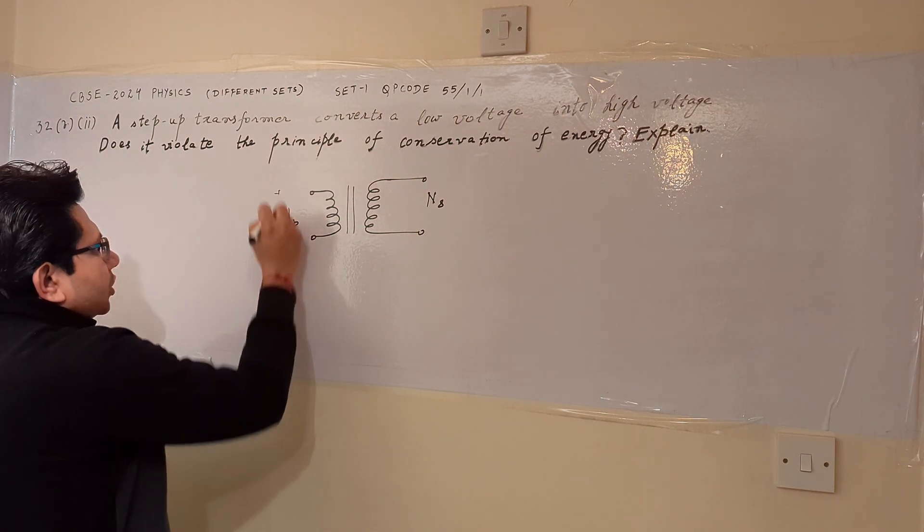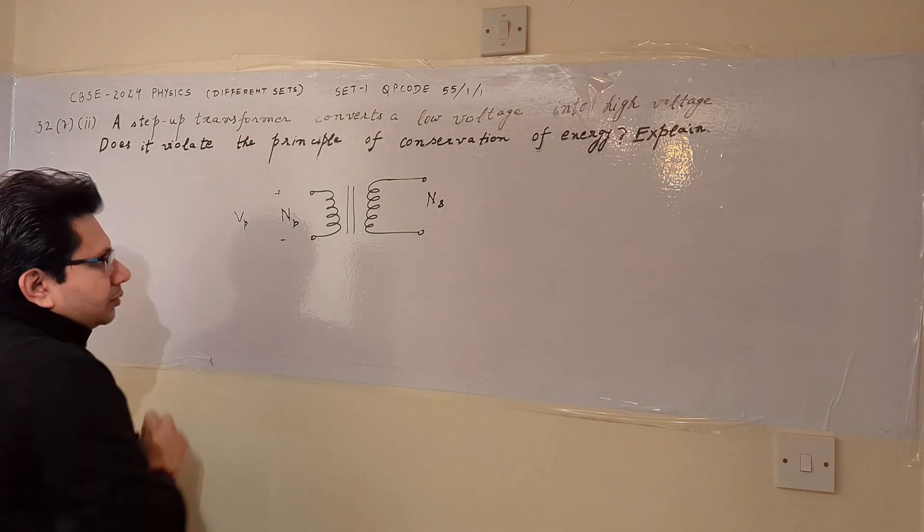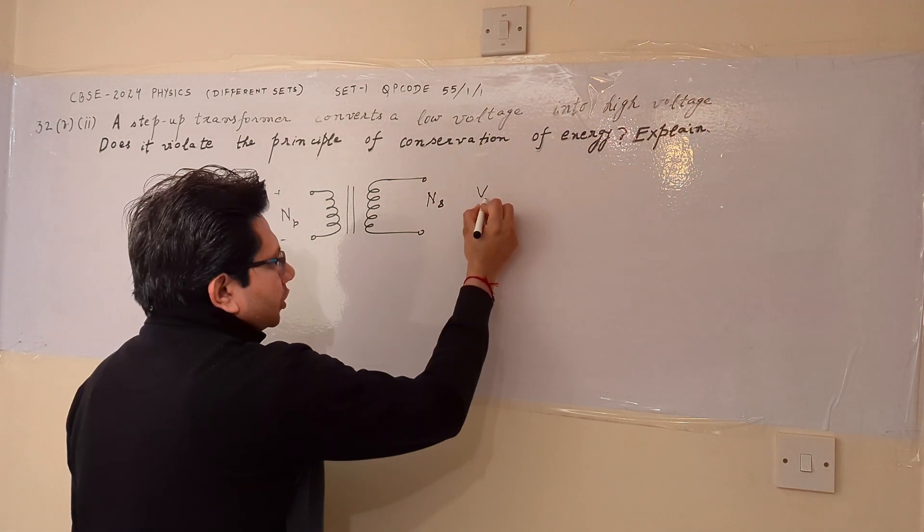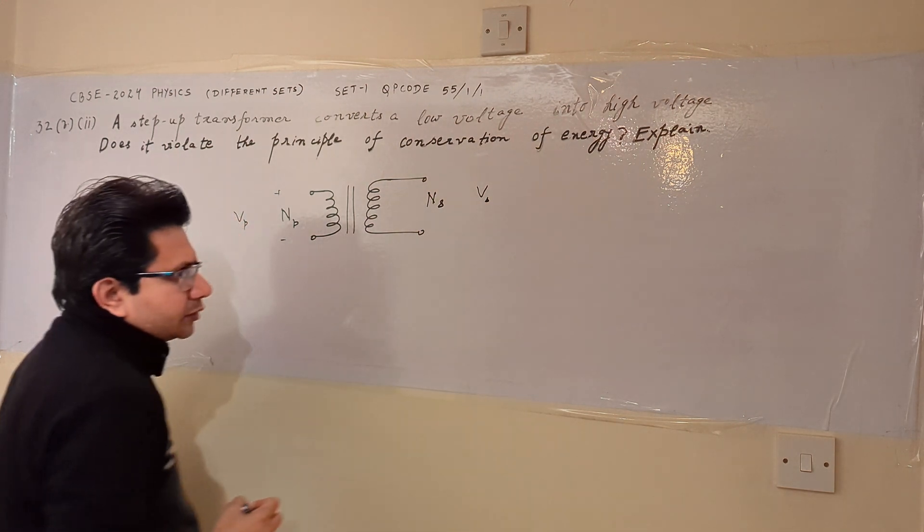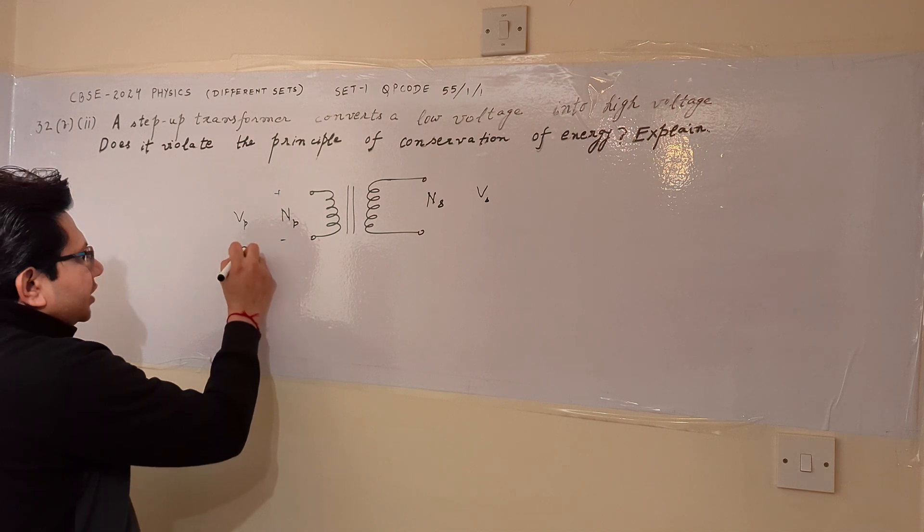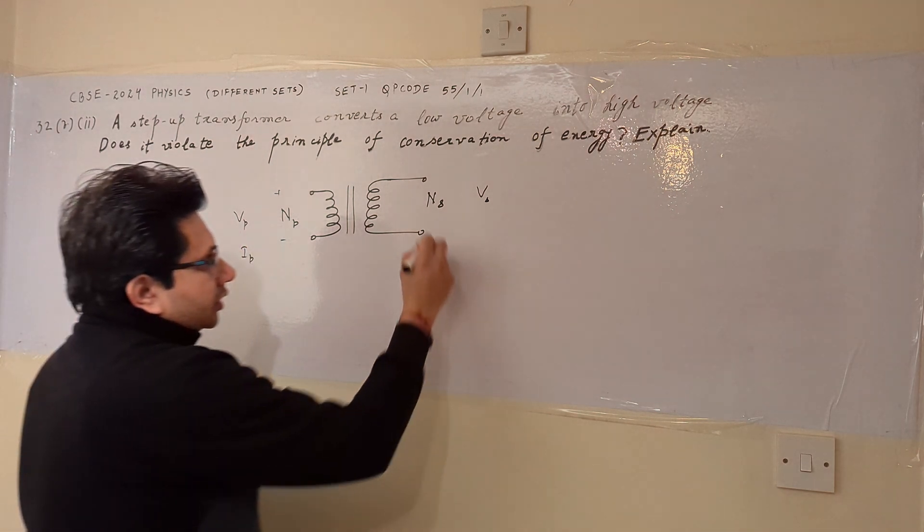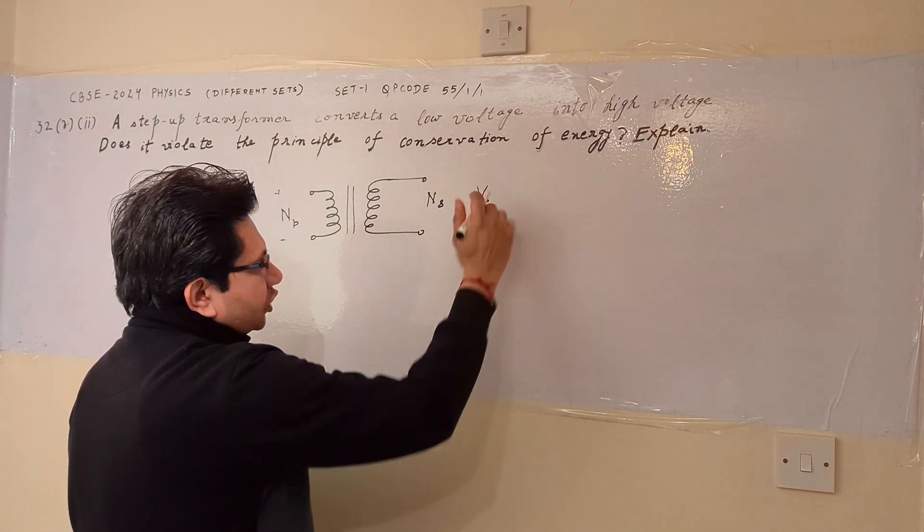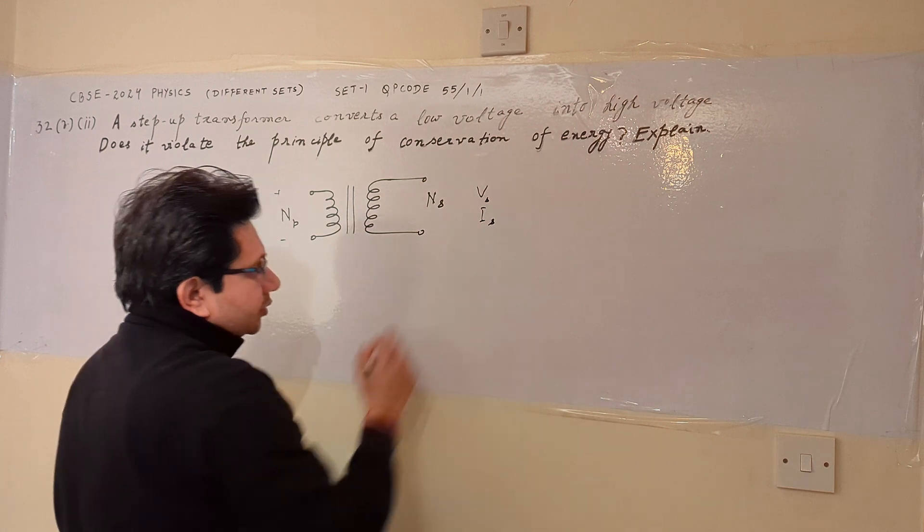The voltage across the primary is V sub T and the voltage across the secondary side is V sub S. The current applied to the input side, that is the primary side is I sub T and the current obtained at the load side is I sub S.